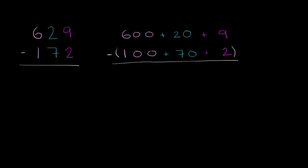We'll start with the ones place. So we have 9 minus 2. That's clearly just 7. And over here, we could also say 9 minus 2, we have the subtraction out front. That is going to be 7. Pretty straightforward.